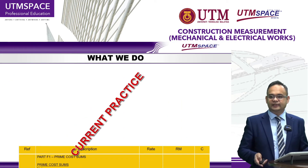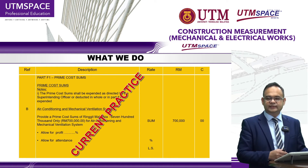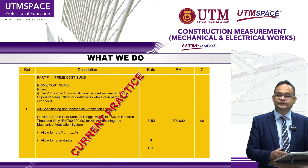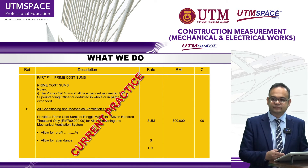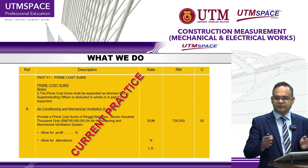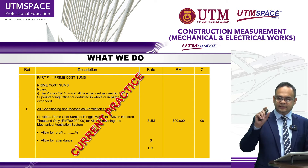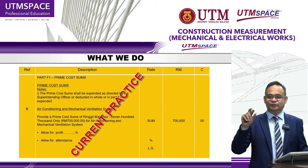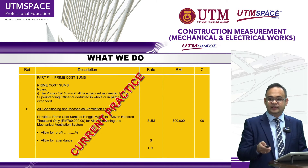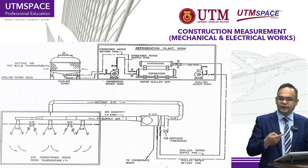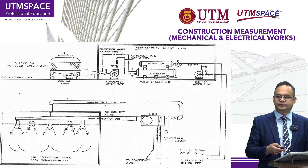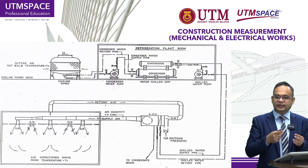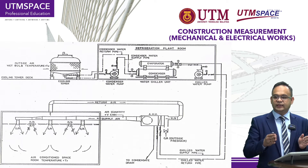This is what we do in current practice. You can see here — this is the practice by the Malaysian construction industry, where we measure the engineering services in a prime cost sum. For example, we provide here air conditioning and mechanical ventilation system; we allow for profit as a percentage and also for attendance on a lump sum basis. When we receive drawings from the architect and also from the engineering services consultant — for example, the mechanical and electrical consultant — we can actually produce a BQ for that particular item.